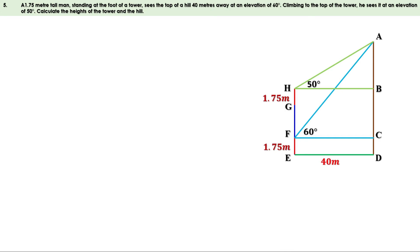We need to find the heights of the hill and the tower. In this figure, AD is the hill and EG is the tower. First, let us identify two right triangles: triangle ABH and triangle ACF. DE is 40 meters, therefore CF is also 40 meters and BH is also 40 meters. Take right triangle ABH. Tan 50 equals opposite side by adjacent side, or AB by BH.